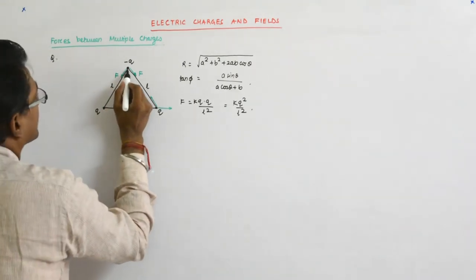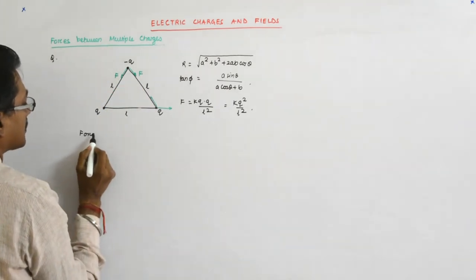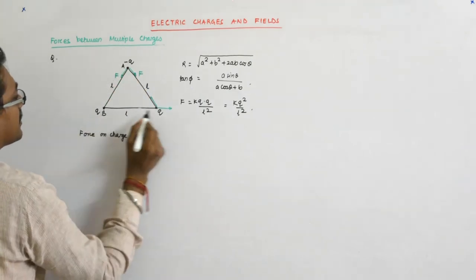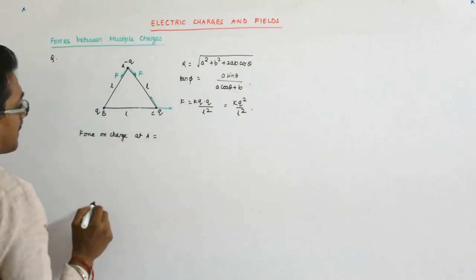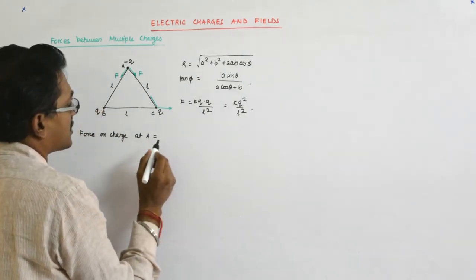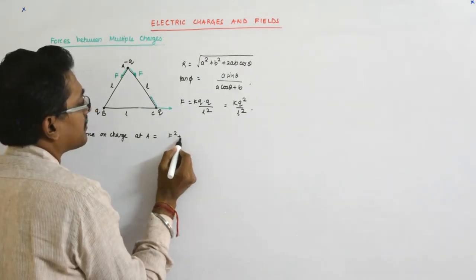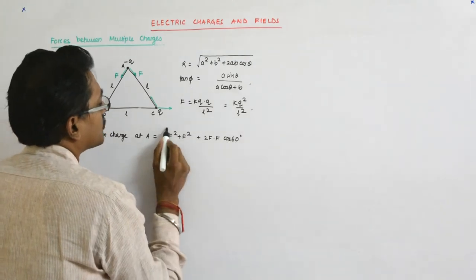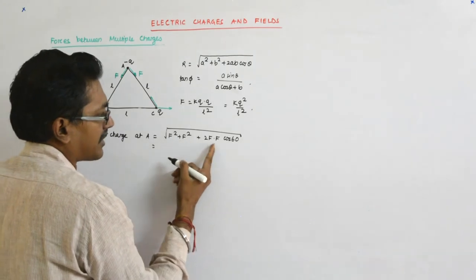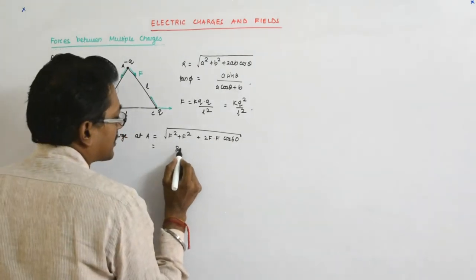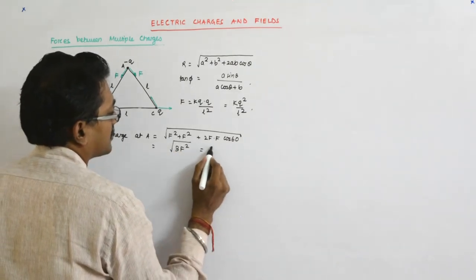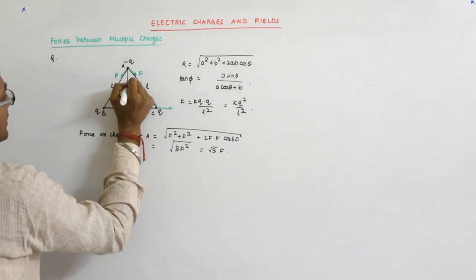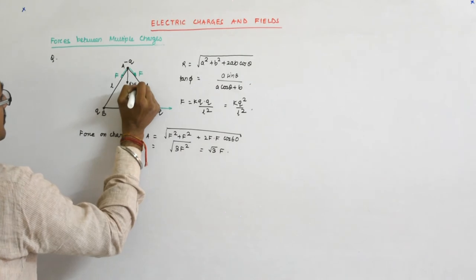Now what is the angle? The resultant force on charge at A - this is A, this is B, this is C - force on charge at A is equal to F square plus F square plus 2F into F into cos 60. And cos 60 is half. So this is F square plus F square and this is 2F squared into half is F square. So this is 3F square, which is root 3F. And since they are equal, it will be a bisector. So it is root 3F in the minus J direction.